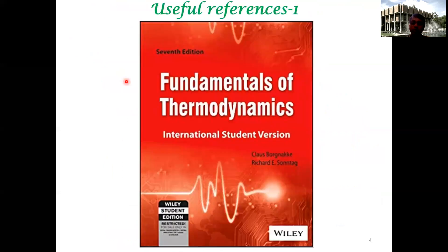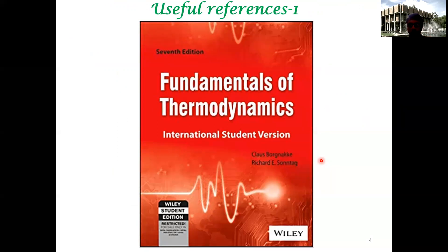Another book, which is slightly more concise than Cengel and Boles, is by Sonntag and Van Wylen — it has also been used by some instructors in previous years. Sometimes explanations that are slightly less clear in Cengel and Boles are better explained in this book. Since the institute is providing online access to Cengel and Boles, you could buy Sonntag as a hard copy.